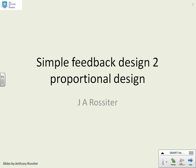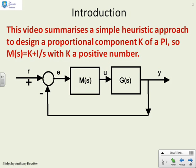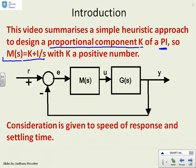This video looks at the effect of proportional design in a simple feedback design approach. Assuming a standard feedback loop, we're going to focus on PI compensators, and in particular the proportional component. A PI compensator is something like K plus I over S, with K a positive number. We want to look at the impact of K on the speed of response and the settling time, to give some guidance on choosing the proportional component.